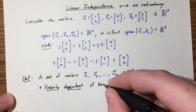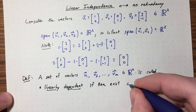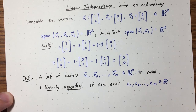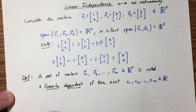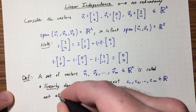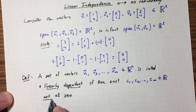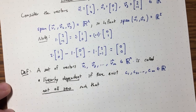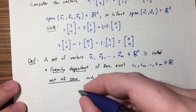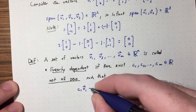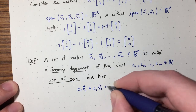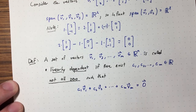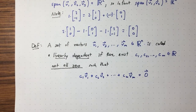Specifically, it's called linearly dependent if there exist scalars C1, C2, ..., Cm — real numbers — not all zero. That part is really important; I'm excluding the case where they're all zero. Such that C1·V1 + C2·V2 + ... + Cm·Vm equals the zero vector.